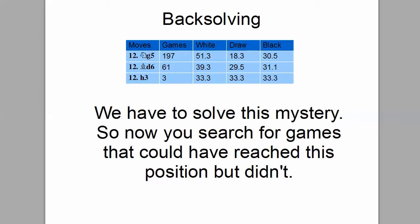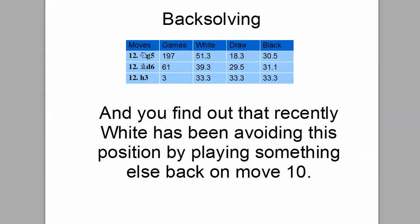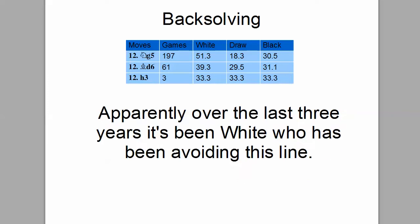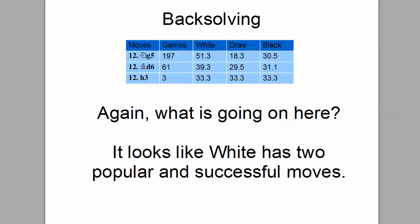Now you search for games that could have reached this position, but didn't. And you find out that recently, white has been avoiding this position by playing something else back on move 10. Apparently, over the last three years, it's been white who has been avoiding this line. Again, what is going on here? It looks like white has two popular and successful moves.